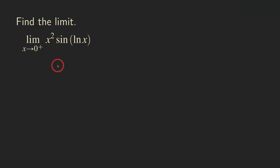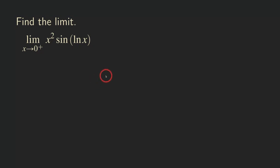So how does the Squeeze Theorem work? If you have a function and you know a lower bound and an upper bound for that function, and if you take the limit of both the upper and lower bounds and they both exist and are equal to the same number, then the limit of the middle function will also equal that same number.